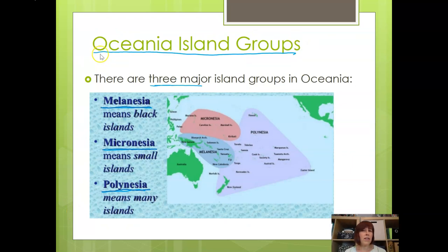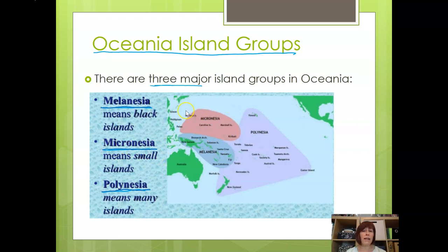There are three major Oceania island groups. The first is Melanesia, which comes from the term 'Black Islands,' referring to the skin tone of the people. These are mostly larger islands. The second is Micronesia — micro means small — which are small islands. The third is Polynesia, which means 'many islands.' Hawaii is included as part of Polynesia, and so is New Zealand.